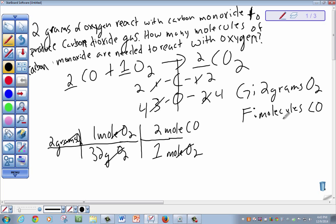But we're looking to find molecules of carbon monoxide. So we convert moles to molecules using Avogadro's number. 1 mole of carbon monoxide is equal to 6.022 times 10 to the 23rd power.